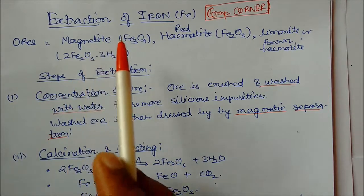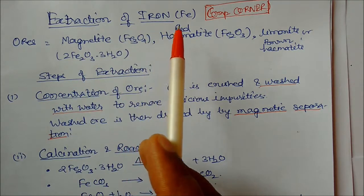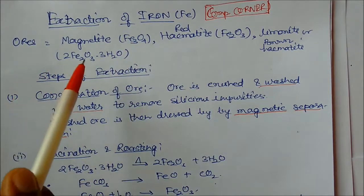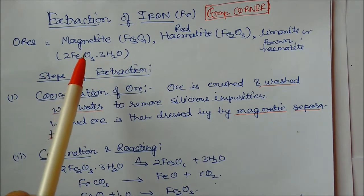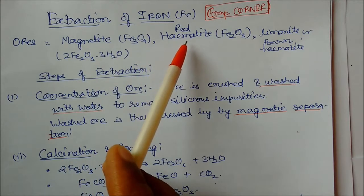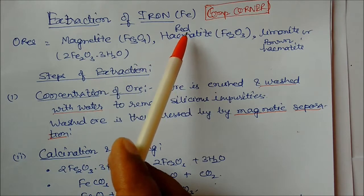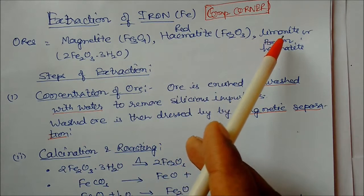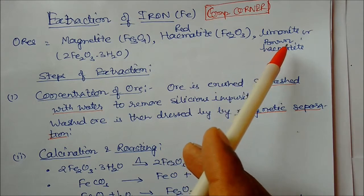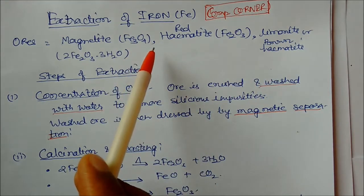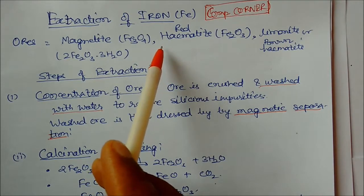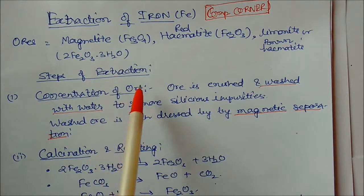In this section we will see the extraction of iron. For extraction of iron we require different types of ores that we have studied earlier, like magnetite ores, hematite ores — hematite ores is actually red — and limonite ores, or brown hematites. These are the ores normally utilized for extraction of iron.